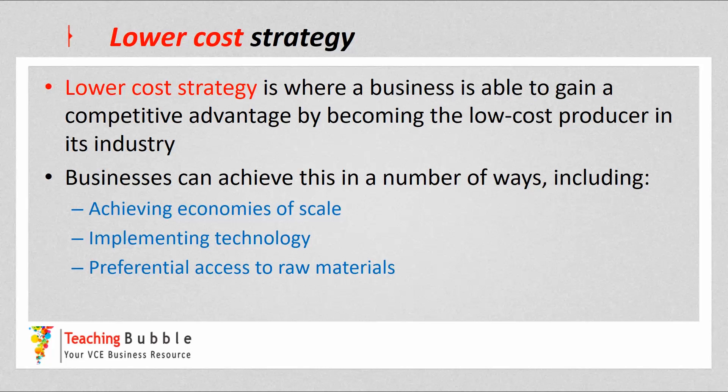Another way is implementing technology — or what Porter calls proprietary technology — and also having preferential access to raw materials, where a business has priority access in terms of cost, or is the only one that can access those materials compared to competitors.